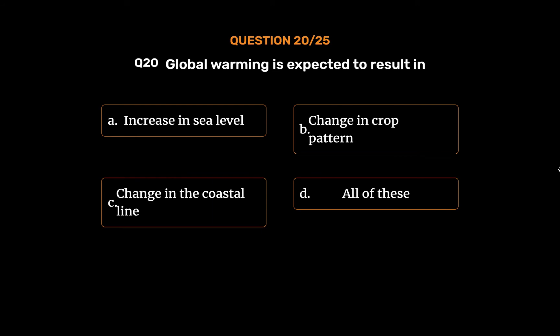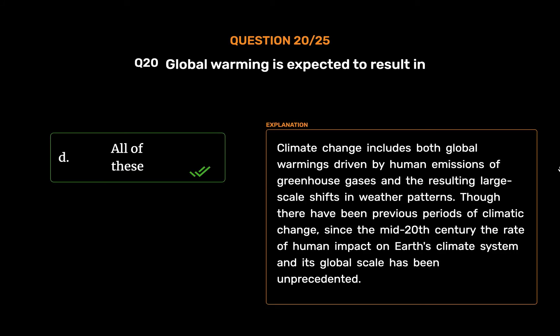The correct answer is Option D: All of these. Climate change includes both global warming driven by human emissions of greenhouse gases and the resulting large-scale shifts in weather patterns. Though there have been previous periods of climatic change, since the mid-20th century the rate of human impact on Earth's climate system and its global scale has been unprecedented.